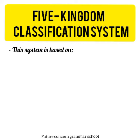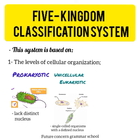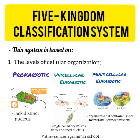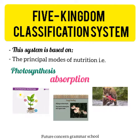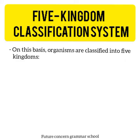This system is based on the following: the levels of cellular organization — Prokaryotic, Unicellular Eukaryotic, and Multicellular Eukaryotic — and the principal modes of nutrition: Photosynthesis, Absorption, and Ingestion. یعنی خوراک حاصل یا تیار کرنے کے طریقے جیسا کہ Photosynthesis، خوراک جذب کر کے جسم میں لے جانا، اور خوراک کھا کر جسم میں لے جانا۔